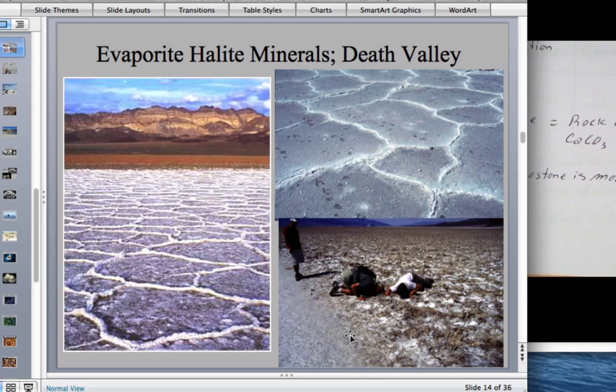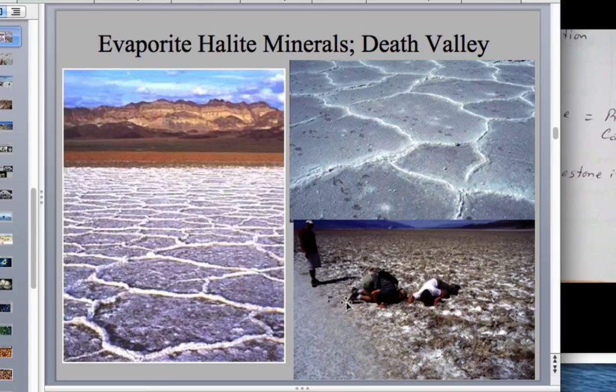Here on the PowerPoint is a Death Valley Playa. Remember, when the water evaporates, what we find is that the dissolved ions in solution come together in ionic bonds and make salts. There is a variety of salts, but one of the more abundant ones is halite, which is rock salt. Here you can see some of the halite in the Death Valley Playa, and here are students actually tasting the halite.